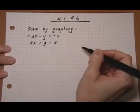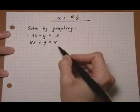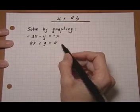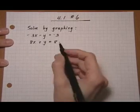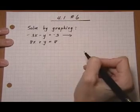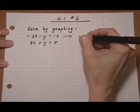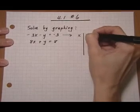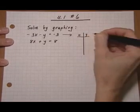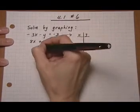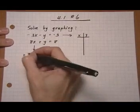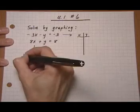4.1 number six. Here we have a system of two linear equations and we want to find the solution by graphing. So again as in the other problems we're first going to make a chart for each equation so we can graph it.